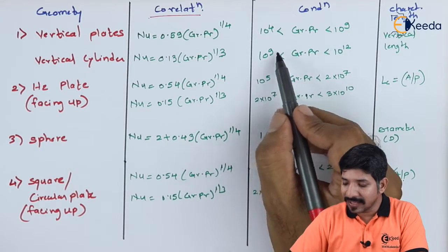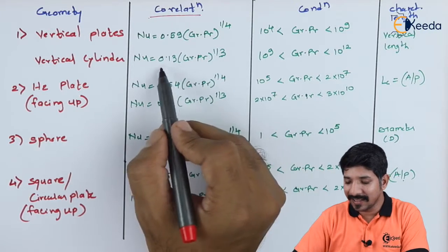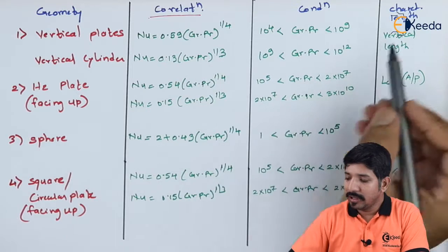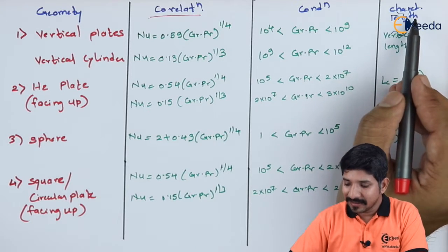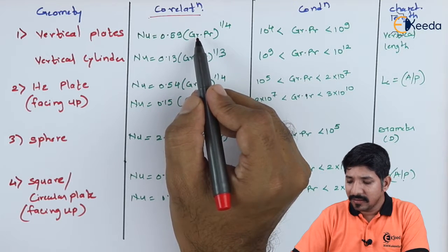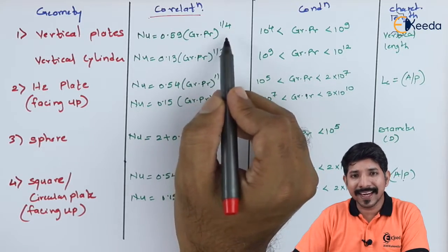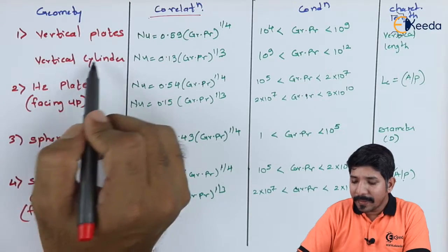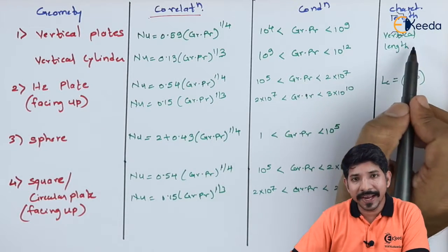Similarly, if the Rayleigh's number is between 10^9 and 10^12, then the Nusselt number is given as 0.13 times Rayleigh's number raised to 1/3. In this case the characteristic length used to find the Grashof number is L, which stands for the vertical length of the plate or cylinder.